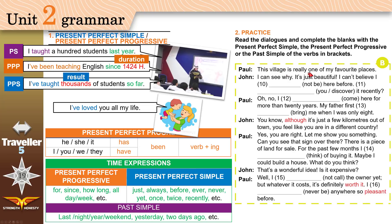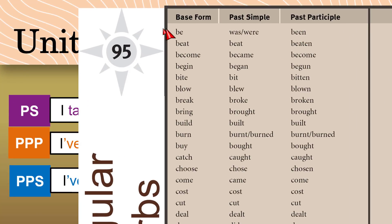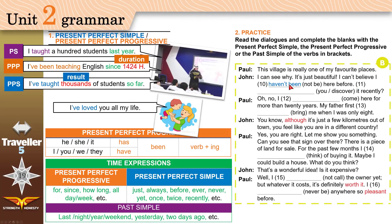'This village is really one of my favorite places.' 'I can see why — it's just beautiful.' 'I can't believe I haven't been here before.' 'Be' is a stative verb, so use Present Perfect Simple: 'I haven't been.' Note that 'been' is the past participle of 'be,' so this is Present Perfect Simple, not Progressive.